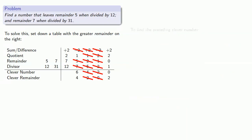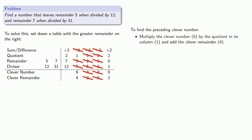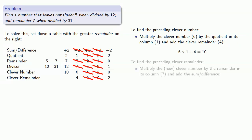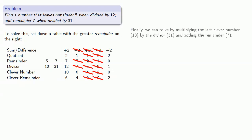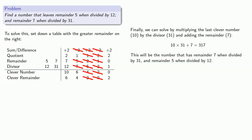We're almost there. To find the preceding clever number, we multiply the clever number by the quotient and add the clever remainder. We multiply the new clever number by the remainder, add the sum or difference, then divide. And finally, we solve by multiplying the last clever number, 10, by the divisor, 31, and adding the remainder, 7. Our number, 317, is the number that has remainder 7 when divided by 31, and — we can verify — remainder 5 when divided by 12.